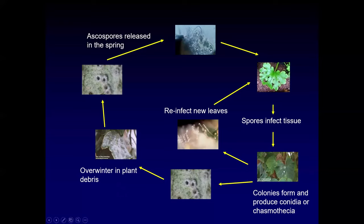Once the powdery mildew realizes conditions are going bad — either the leaves are starting to senesce and die or it gets cold — it switches from producing the asexual spores in the summertime to producing fruiting structures with the overwintering spores again. Then they'll hang out on the leaf and plant material until the next spring and the cycle starts again. You want to start treating when you see those first white spots. If you wait until the leaf is completely covered in powdery mildew, you will not get any control of the pathogen — it's too late.